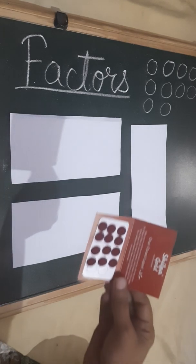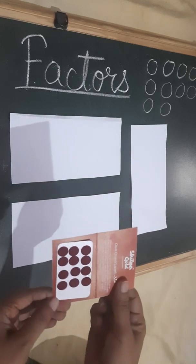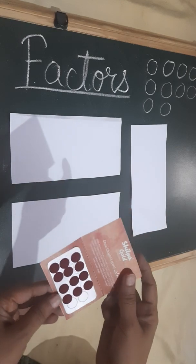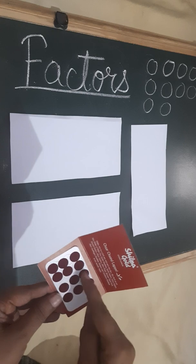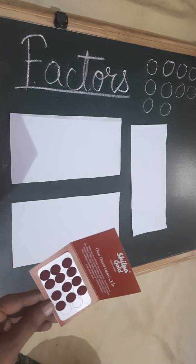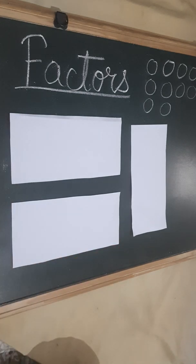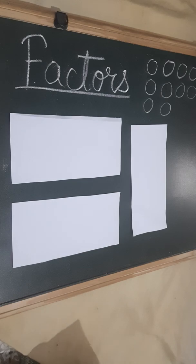Now I am having 12 bindis: 1, 2, 3, 4, 5, 6, 7, 8, 9, 10, 11, 12. You can take any object — you can take buttons, matchsticks, toothpicks, or circle cutouts.